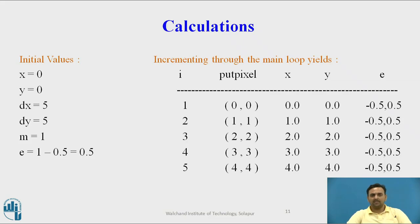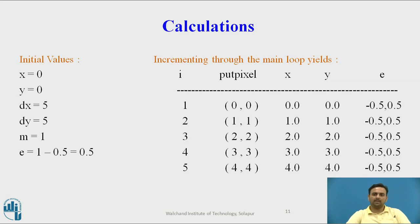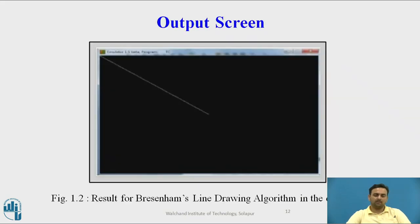These are some calculations: from (0,0) to (5,5), the slope is 1 and the initial error bit is 0.5. According to our algorithm, the x and y values are incremented and the error bit alternates between positive and negative based on the difference between the slope values. This is the output screen you can see after execution of the program.